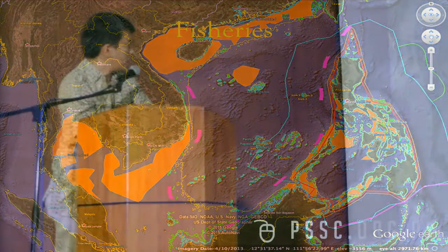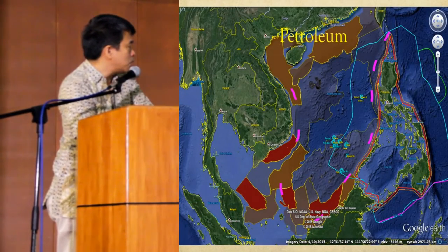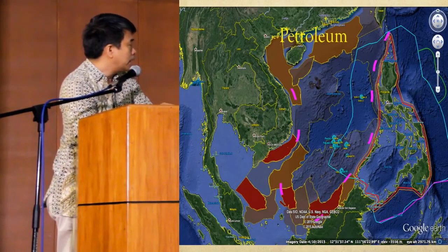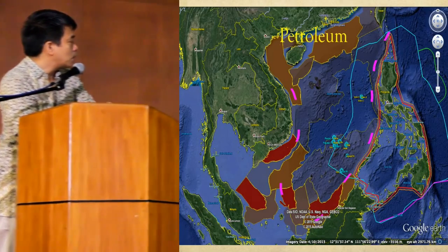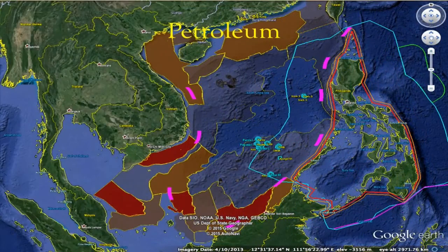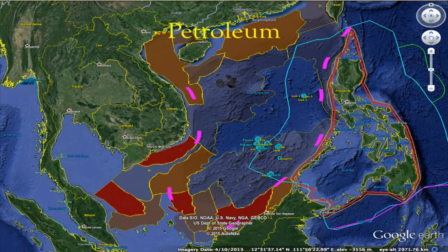This is a representation of the sedimentary basins where petroleum reserves can be found. The redder they are, the more petroleum reserves there are. Similar to fishing, most of the petroleum is near the coastline of the various countries. The petroleum content of the middle part of the South China Sea — particularly the light area — is zero. Along the darker areas it's still unknown to maybe minimal, and that is based on American data compiled from various oil companies operating in this region.